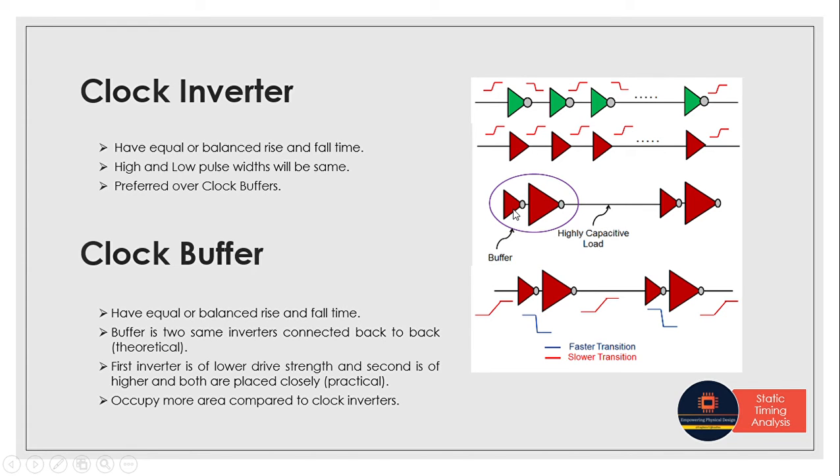For the higher drive strength inverter, the load comprises wire capacitance and input capacitance of the next inverter. We get enough wire length here compared to between the two inverters, so there's highly capacitive load and resistance reduces. When resistance reduces, transition happens faster, meaning delay reduces.